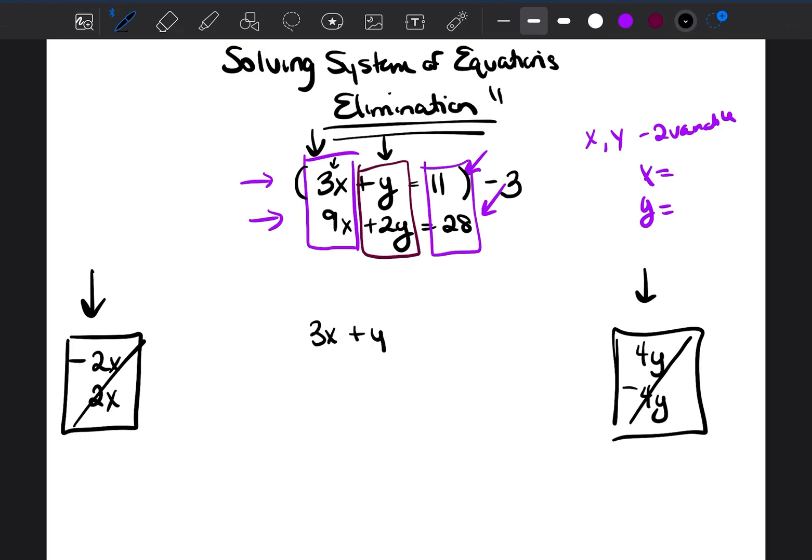I'm going to bring this equation down, just so that we can work with it nice and fresh. And we're going to multiply the entire equation, that means both sides, by the number negative 3. So negative 3 times 3x would be negative 9x, negative 3 times y would be negative 3y, and negative 3 times 11 would be negative 33. Perfect.